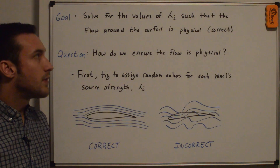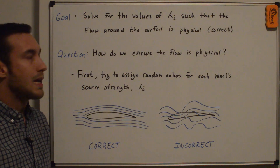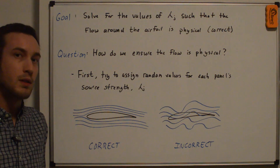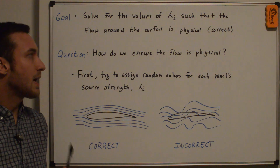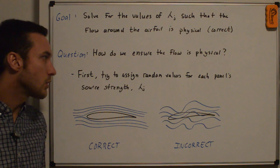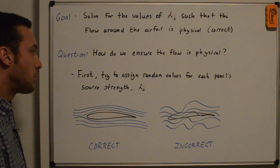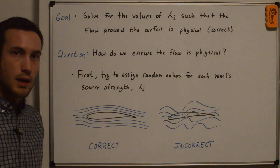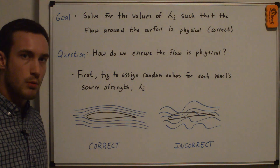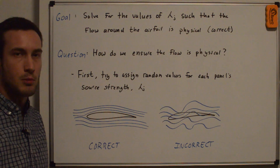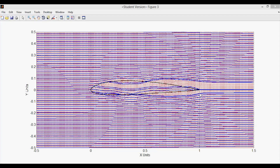The goal is to solve for the values of lambda_J, the source panel strengths, such that the flow around the airfoil is physical or correct. The question is: how do we ensure that flow is actually physical? Let's try assigning random values for each panel's source strength lambda_J. I can show you this in my actual source panel method code where I've assigned random values to these lambda_Js. This is the result from using random lambda_Js for all of the source strengths on all the panels.